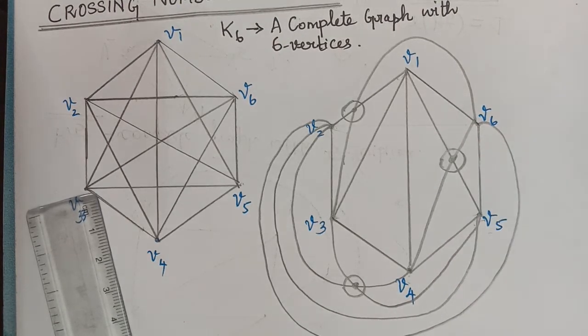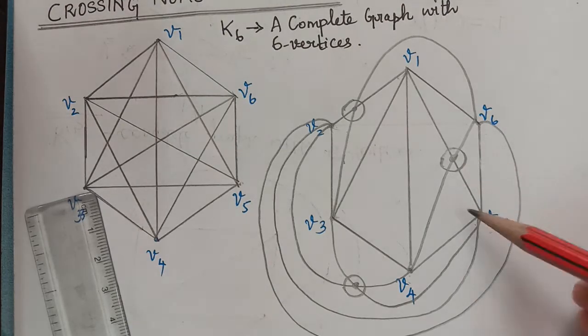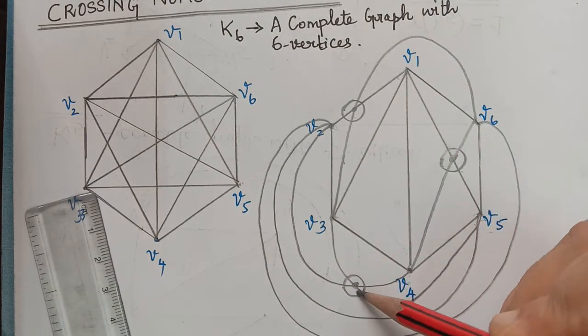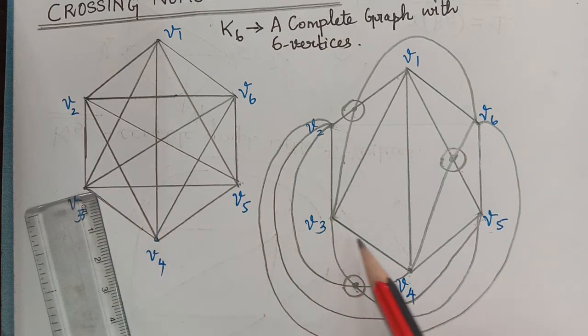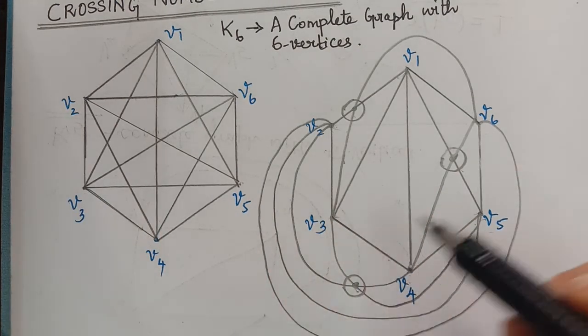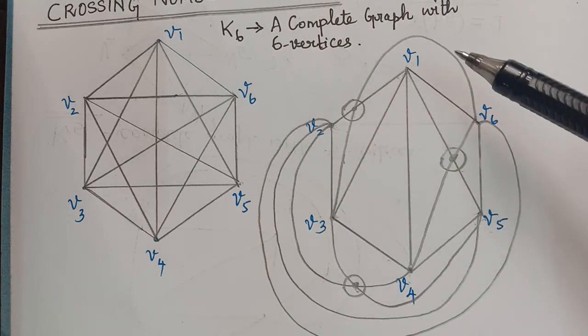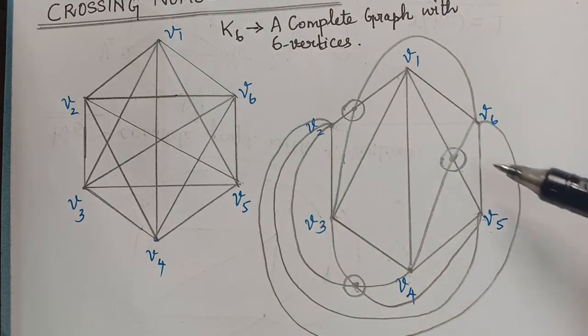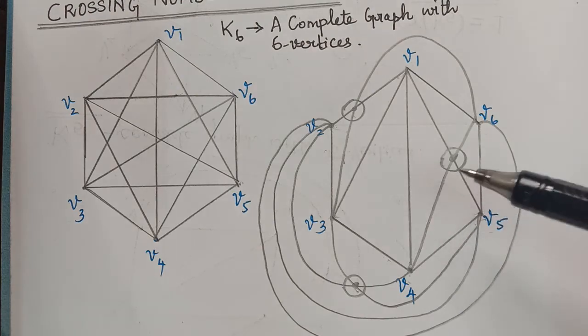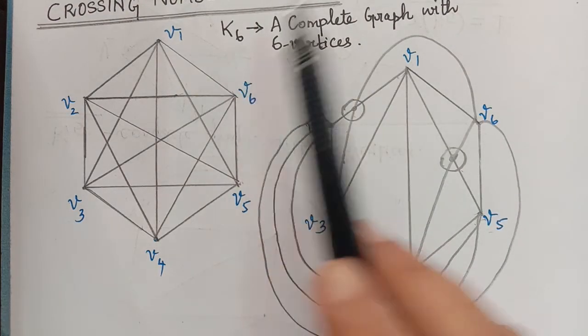When we see here, we have a minimum of 3 crossings in redrawing this graph into a plane. We could see that there are edges between every pair of vertices. We have with a minimum of 3 crossings we have to draw this K6.